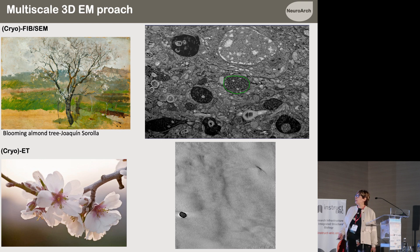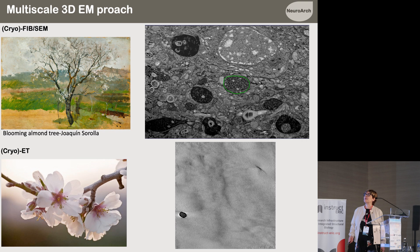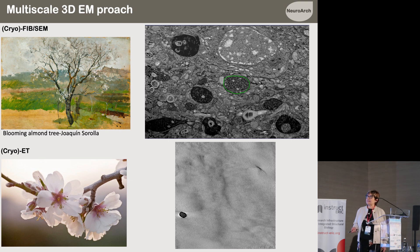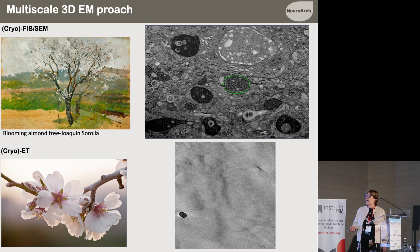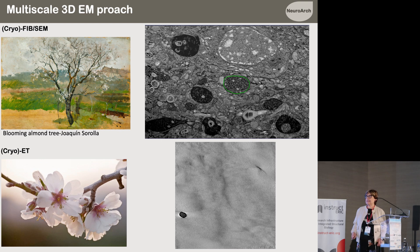Why is it so good to do a multi-scale approach when studying biological samples? It's valuable because you can obtain complementary information from the different techniques. For example, with FIB-SEM you can get the full view of a neuron and the entire mitochondrial network inside. While if you need more precise information, you have to go to electron tomography to get those precise details at high resolution.